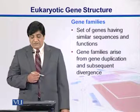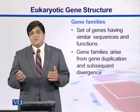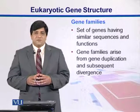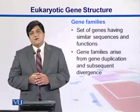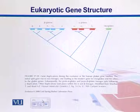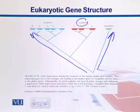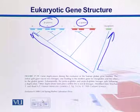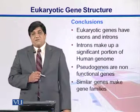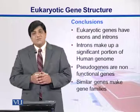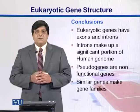Sometimes genes have similar sequences and similar functions. Groups of genes performing similar functions within or between organisms can be categorized as gene families, which arise from gene duplication events. For example, the human globin gene: duplication gives rise to myoglobins and globins, and within the globins we see alpha and beta globins. In conclusion, eukaryotic genes have exons and introns; introns make up a significant proportion of higher organisms' genomes; pseudogenes are non-functional genes; and genes with similar functions make up gene families.